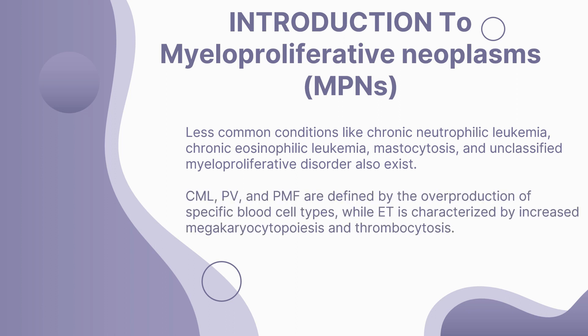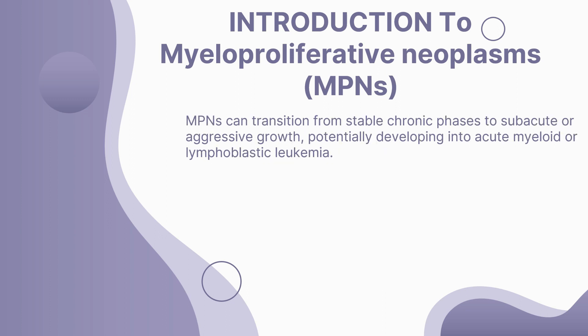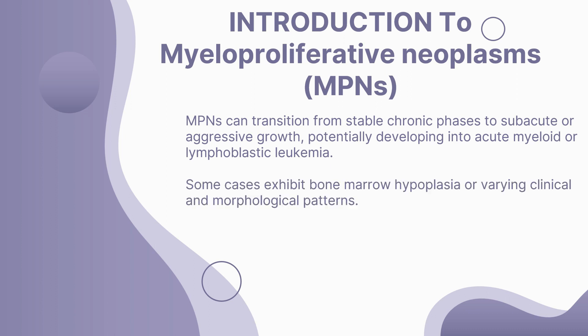In CML, PV, and PMF, you'll find overproduction of specific blood cell types. Essential thrombocythemia is characterized by increased megakaryocytopoiesis and thrombocytosis. MPNs aren't static — they can evolve from stable chronic phases to subacute or aggressive growth, and in some cases transform into acute myeloid or lymphoblastic leukemia. MPNs exhibit varying clinical and morphological patterns, with some cases showing bone marrow hypoplasia.